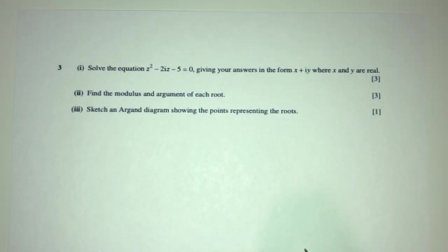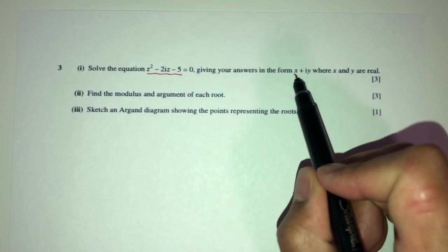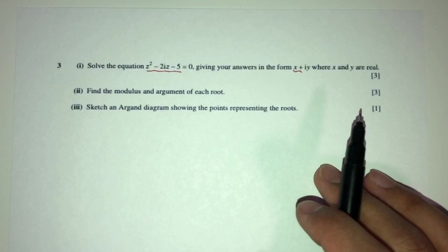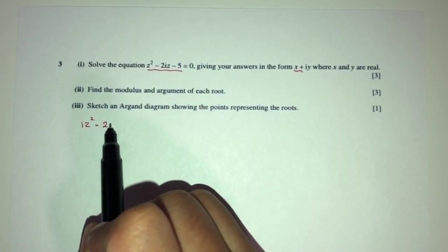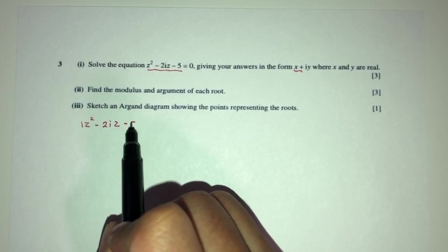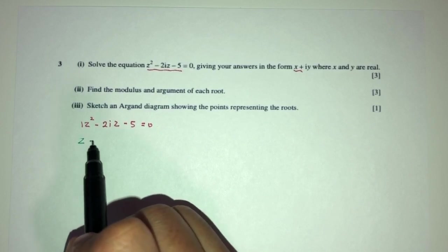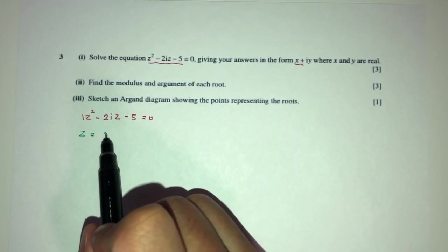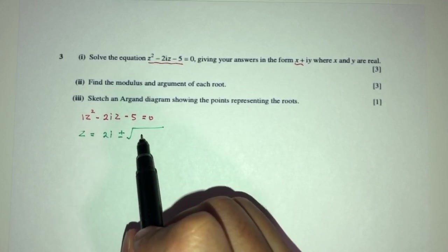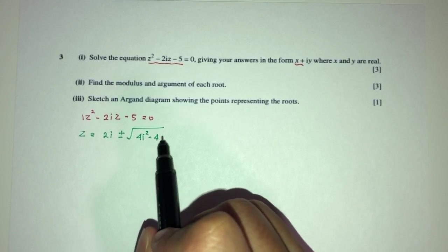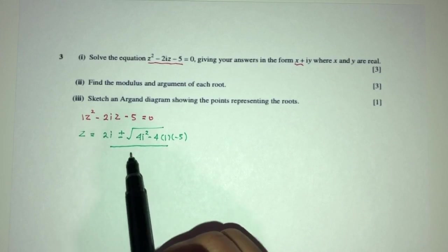Let's move on to question number 3. We have to solve this equation, giving answers in a specific form. We rewrite it as z² − 2iz − 5 = 0. Using the quadratic formula, z = [2i ± √(4i² − 4(1)(−5))] / 2.